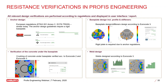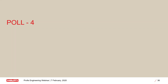Resistance verifications cover anchors — tension and shear capacity, and their combination. For the base plate, we check stresses and strain values. For welds, we check stress and utilization. We also check bearing stress — the stress developed in the concrete under the base plate. All components of the connection are verified.